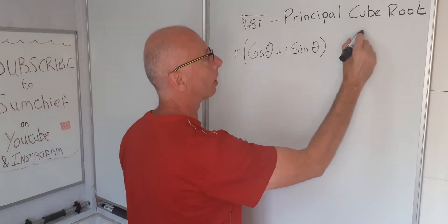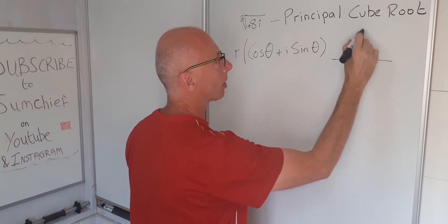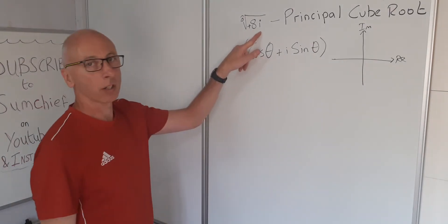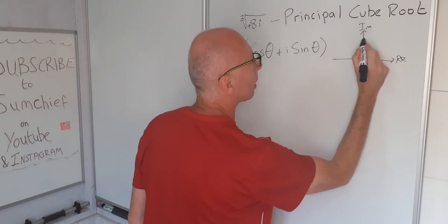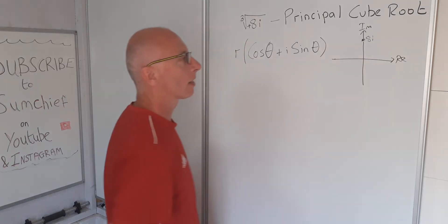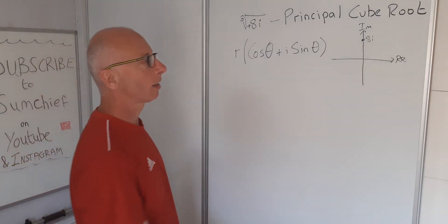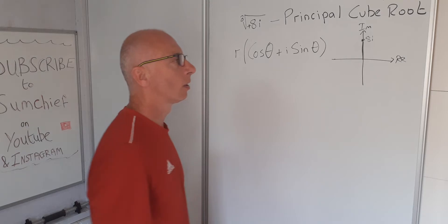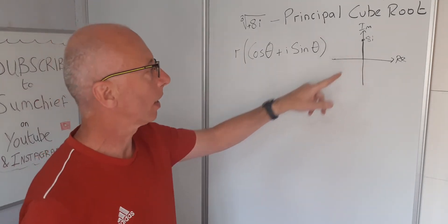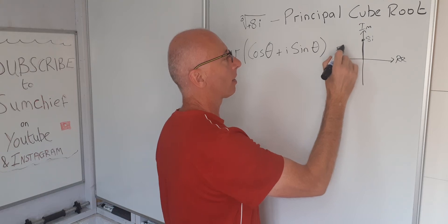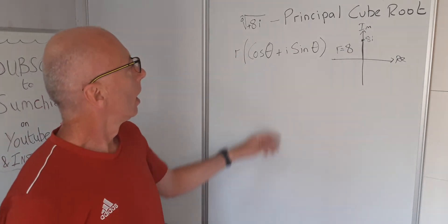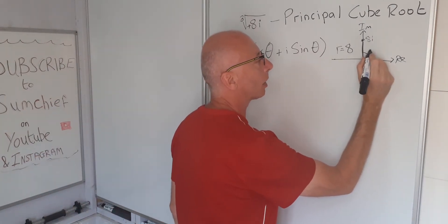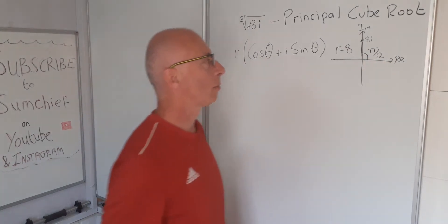Let's draw that up on the diagram. So that's the imaginary axis, that's the real axis. 8i is going to be on the imaginary axis, somewhere around here — that's our 8i. To find the modulus, we just go from the origin to the point and work out the length of that line. As there's no triangle involved and no Pythagoras, we know that r is going to be 8. And our angle theta is just going to be pi over 2, because it's a right angle.